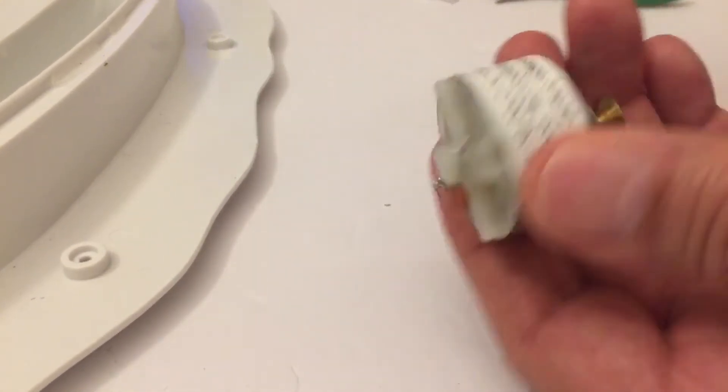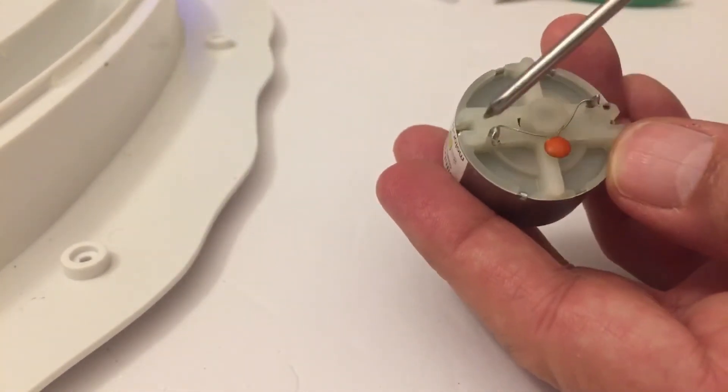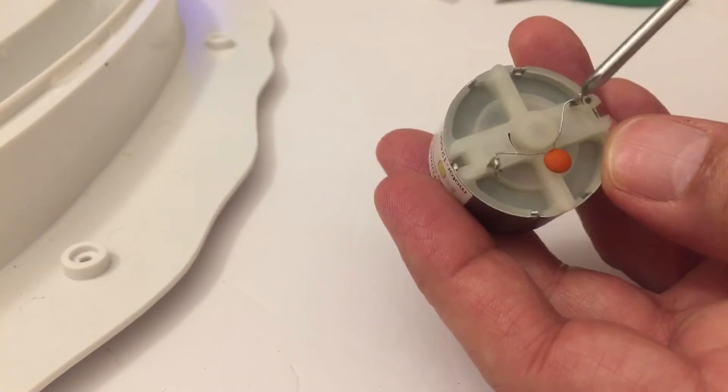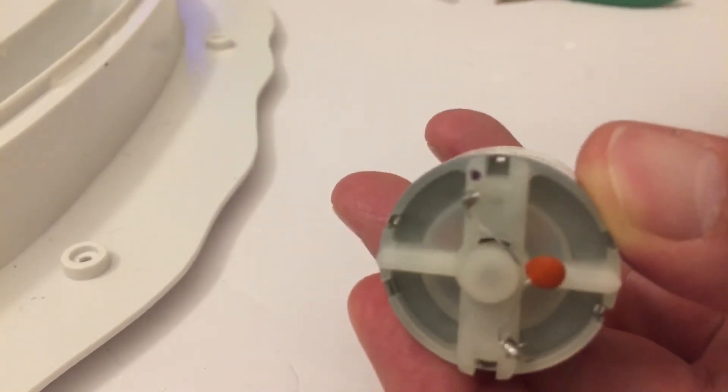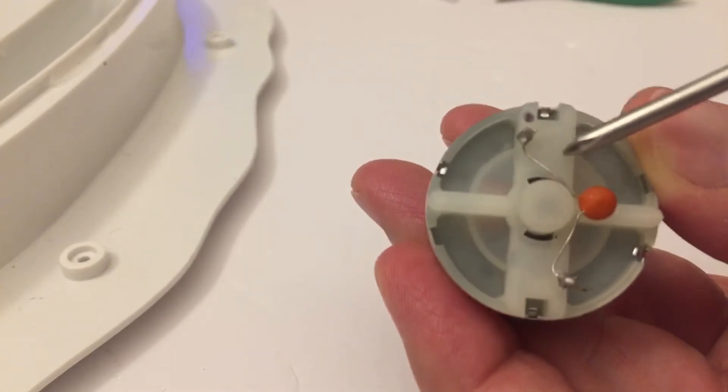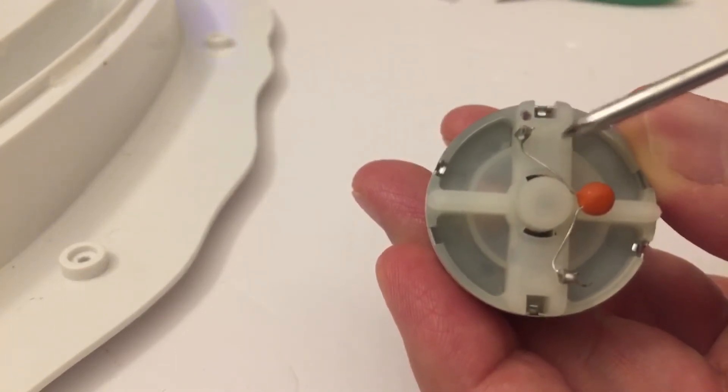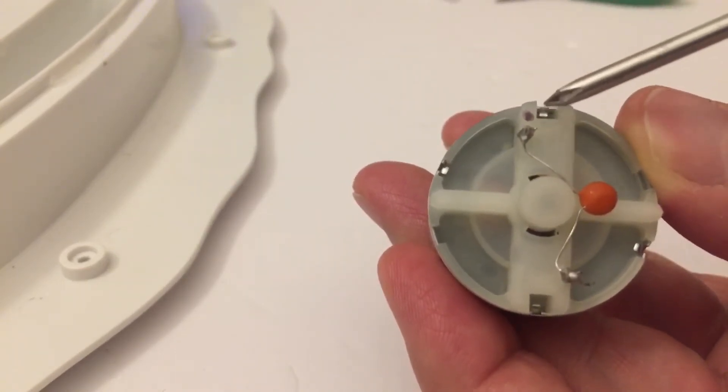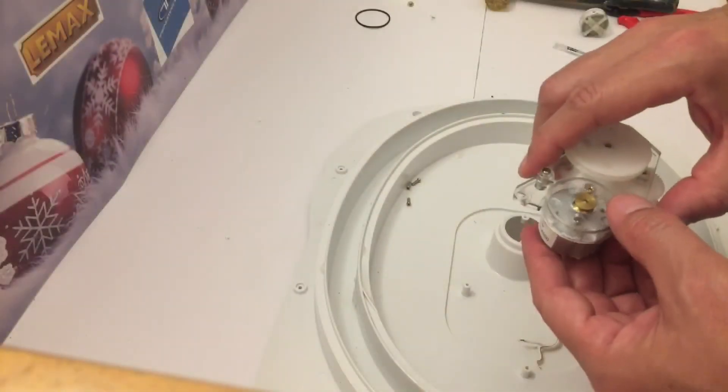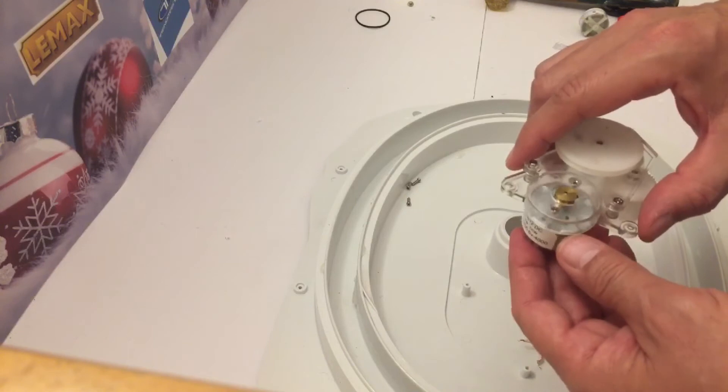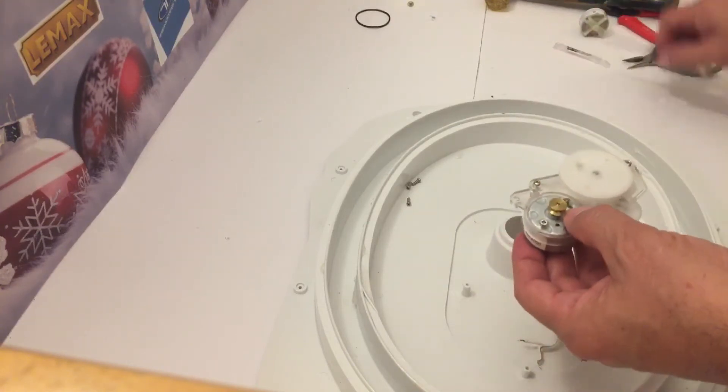New motor. We have installed the new cap and soldered it onto the leads coming out of the new motor. Now, we can install the motor back on the bracket. Grab your Phillips screwdriver and install the screws into the motor holes. Do not over tighten.